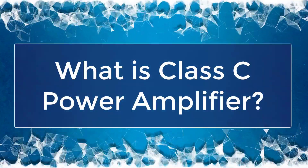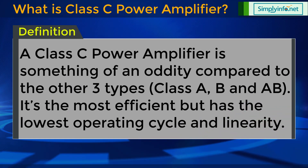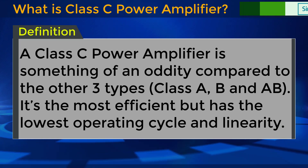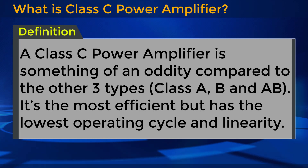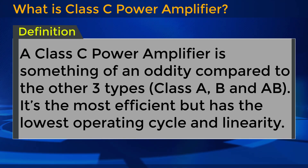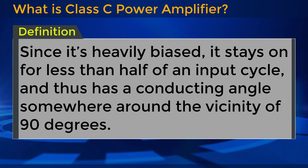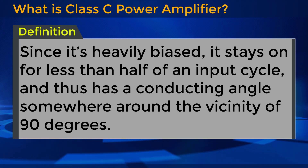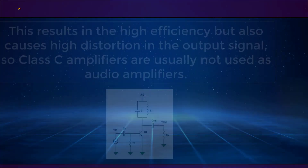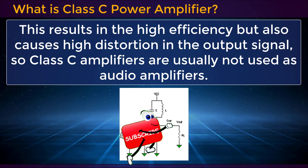What is a Class C Power Amplifier? A Class C Power Amplifier is something of an oddity compared to the other three types — Class A, B, and AB. It's the most efficient but has the lowest operating cycle and linearity. Since it's heavily biased, it stays on for less than half of an input cycle and thus has a conducting angle somewhere around the vicinity of 90 degrees. This results in high efficiency but also causes high distortion in the output signal.